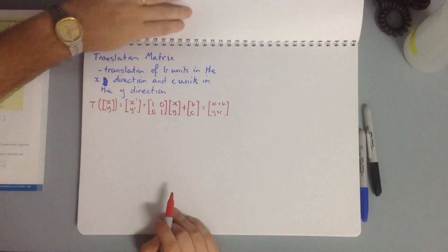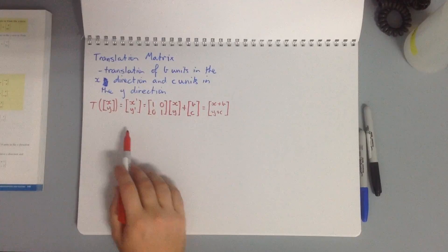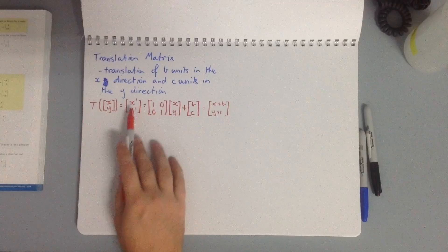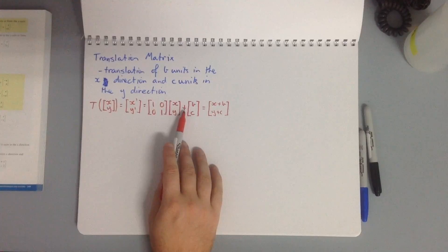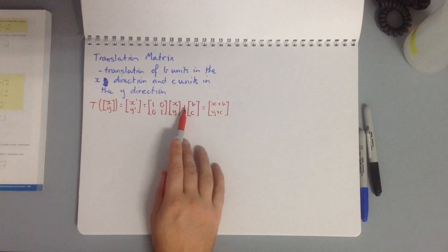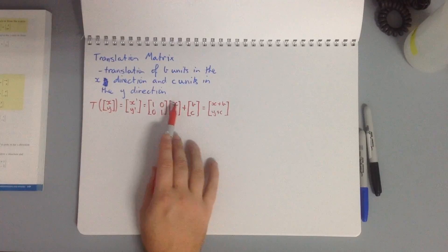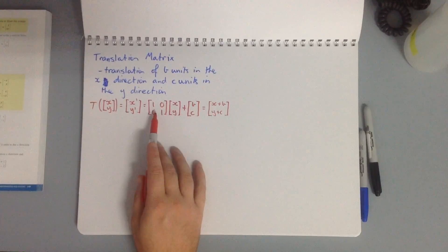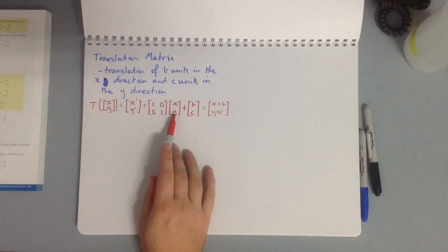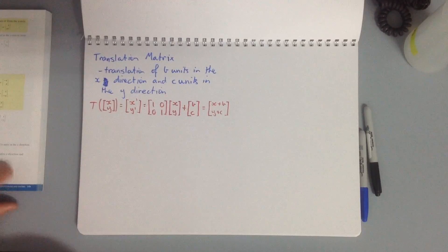For a translation of b units in the x-direction and c units in the y-direction, we have: [x', y'] = [[1, 0], [0, 1]] × [x, y] + [b, c]. Multiplying through: 1×x + 0×y = x, then adding b gives x + b; and 0×x + 1×y = y, then adding c gives y + c.